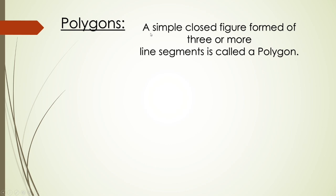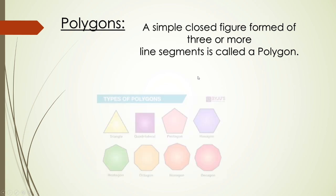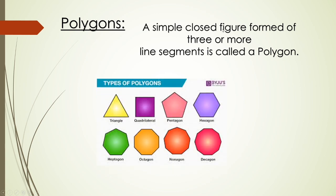Polygons: a simple closed figure formed by three or more line segments is called a polygon. First, it should be a simple closed figure, and it should be formed with a minimum of three or more line segments. Then that figure is called a polygon.